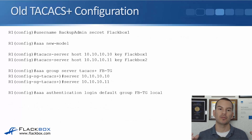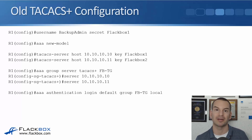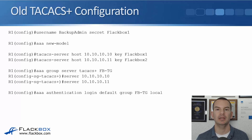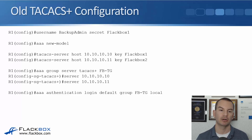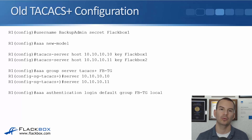Now let's look at the TACACS+ configuration — it's pretty much exactly the same, but we use the keyword 'tacacs-server' rather than 'radius'. Same backup user: 'username backup_admin secret flackbox1'. Then 'aaa new-model', 'tacacs-server host 10.10.10.10 key flackbox1', and a second server for redundancy: 'tacacs-server host 10.10.10.11 key flackbox2'. Then our group: 'aaa group server tacacs+ FBTG' — I've called it FBTG for Flackbox TACACS+ Group — with servers 10.10.10.10 and 10.10.10.11. Finally, 'aaa authentication login default group FBTG local' — the group is first choice, local is the fallback.